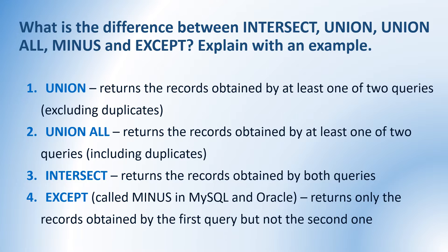What is the difference between INTERSECT, UNION, UNION ALL, MINUS and EXCEPT? If I have two SELECT statements and I perform these operations: UNION returns the records obtained by at least one of the two queries excluding duplicates. UNION ALL is also the same but including duplicates — it returns all the records. INTERSECT returns the records obtained by both queries. EXCEPT — normally we call it MINUS in MySQL and Oracle, and in some databases we call it EXCEPT, but these two operations are the same — it returns only the records obtained by the first query but not in the second one.